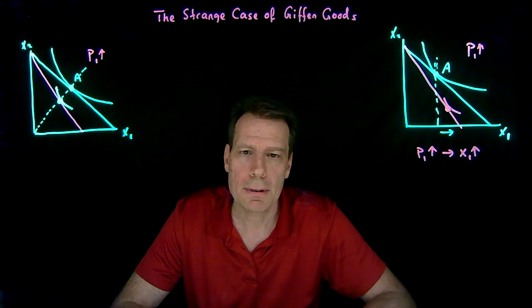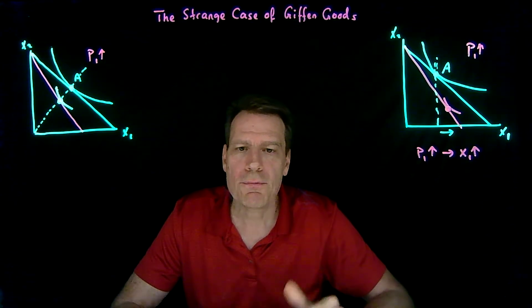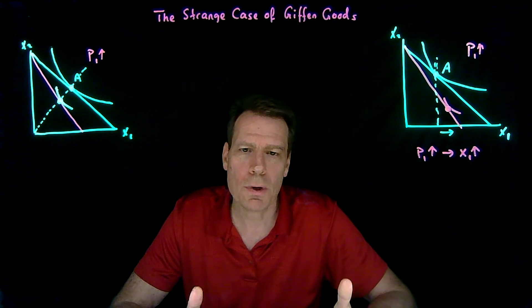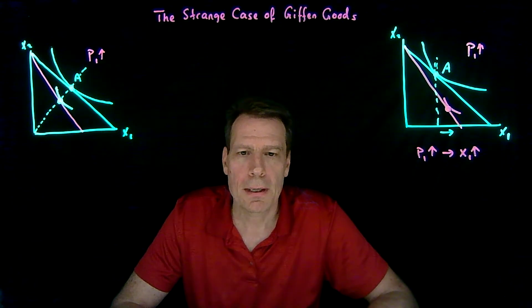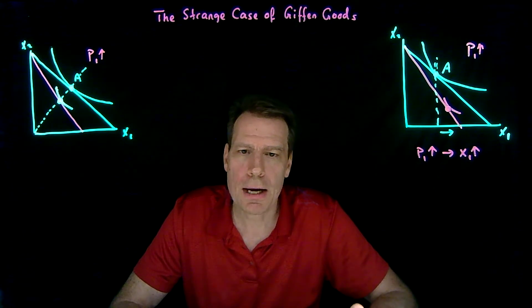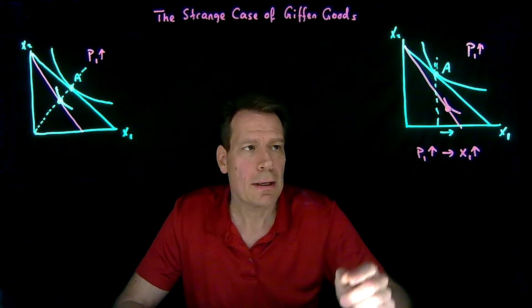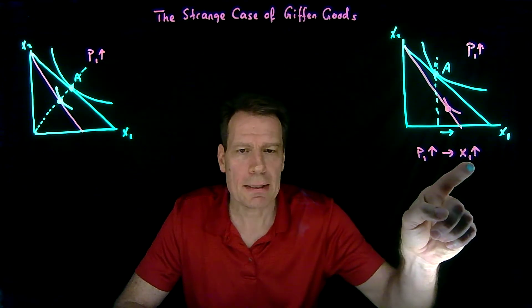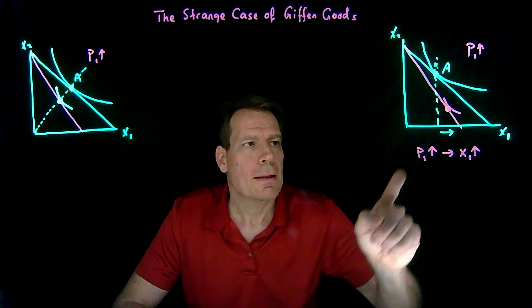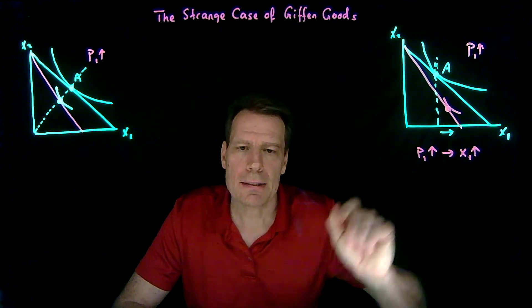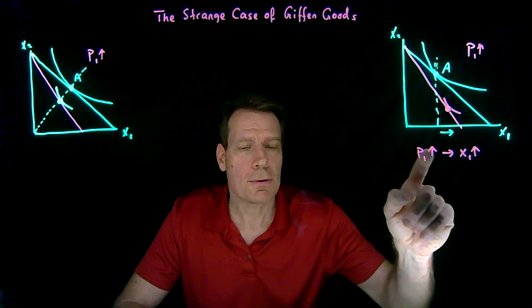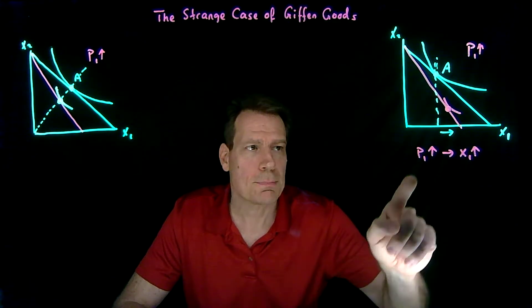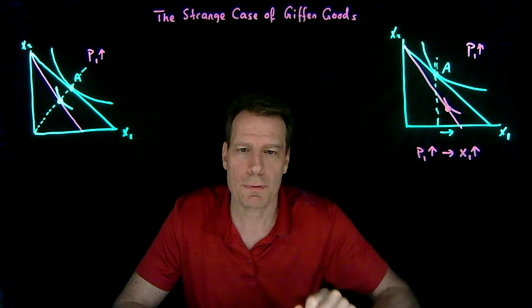It's in principle possible, but it violates what you learned in Econ 101 as the law of downward-sloping demand. We think generally demand slopes downward, which means that if prices fall, you buy more, and if prices rise, you should buy less. This is an example where that's not happening — it's actually an example where the demand curve will be upward sloping. As price increases, you consume more of the good.